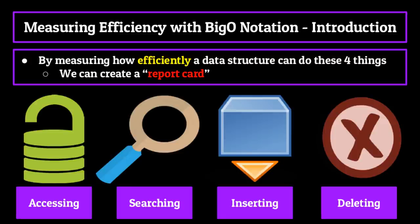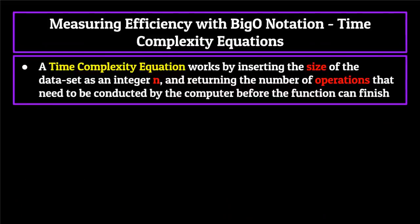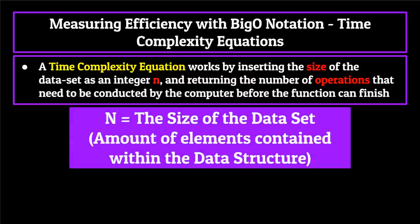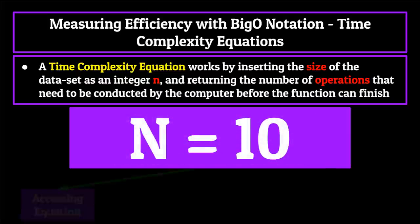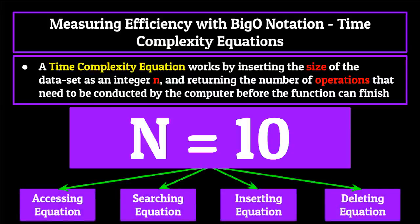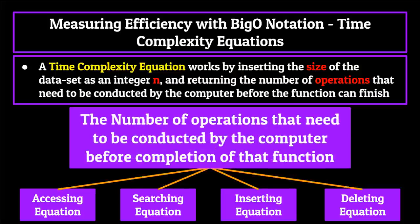A big O notation time complexity equation works by inserting the size of the data set as an integer n, and returning the number of operations that need to be conducted by the computer before the function can finish. The integer n is simply the size or amount of elements contained within the data set. So for example, if we have an array with a size of 10, we would place 10 into the different efficiency equations for accessing, searching, inserting and deleting that represent the array. Returned back to us would be the number of operations that need to be conducted by the computer before completion of that function. All you need to know is that these equations help represent efficiency amongst different data structures.